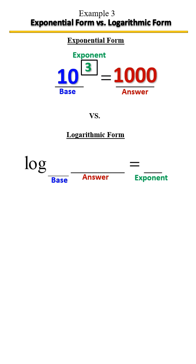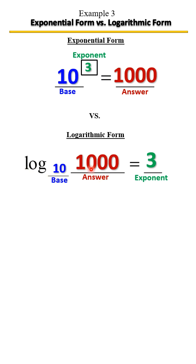Here we're given an expression in exponential form and we're going to rewrite it in log form. It'll be log base 10 of 1000, equals 3. We're just getting all that information from the other form. The way we would read it is log base 10 of 1000 equals 3. In exponential form: 10 raised to the third power equals 1000.